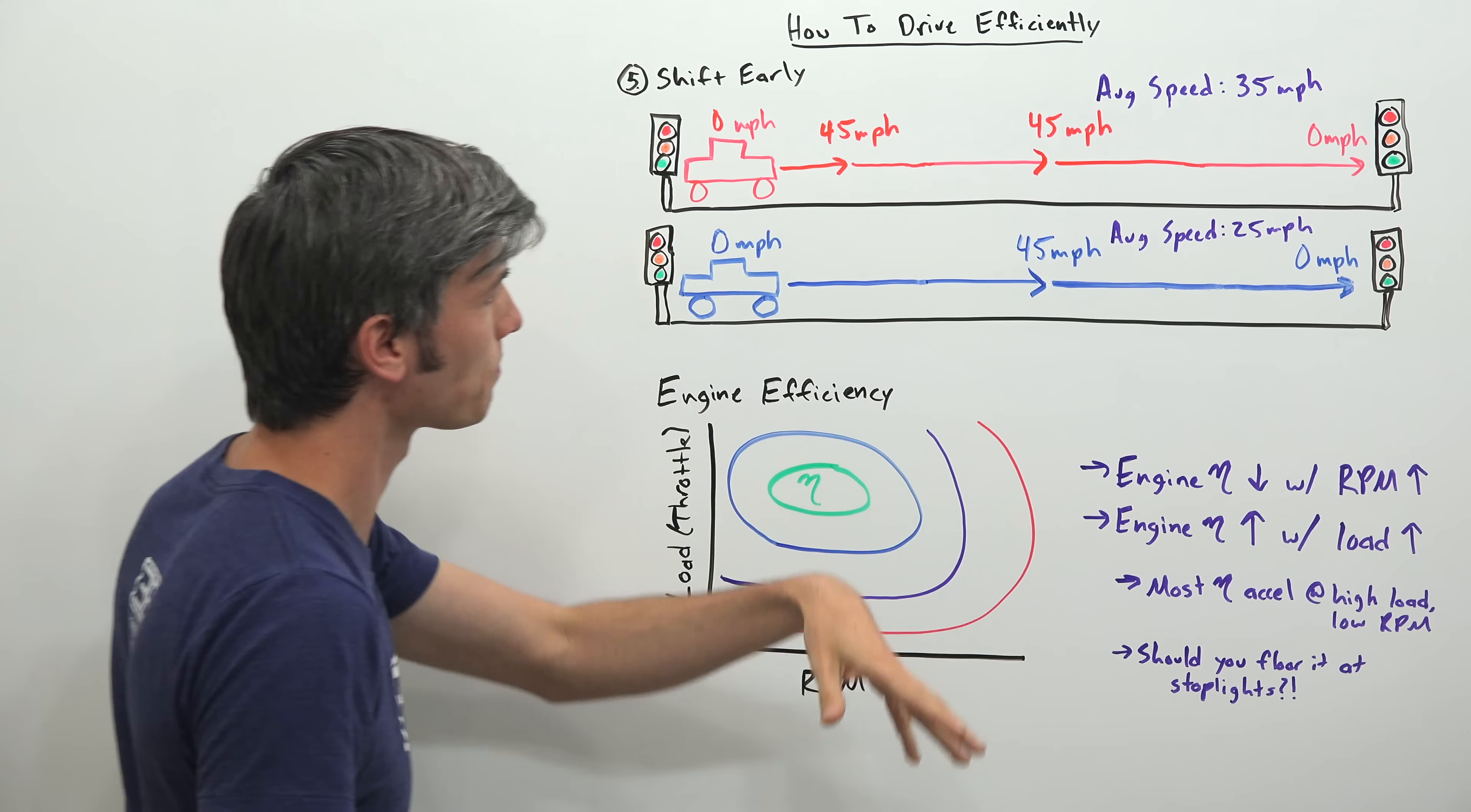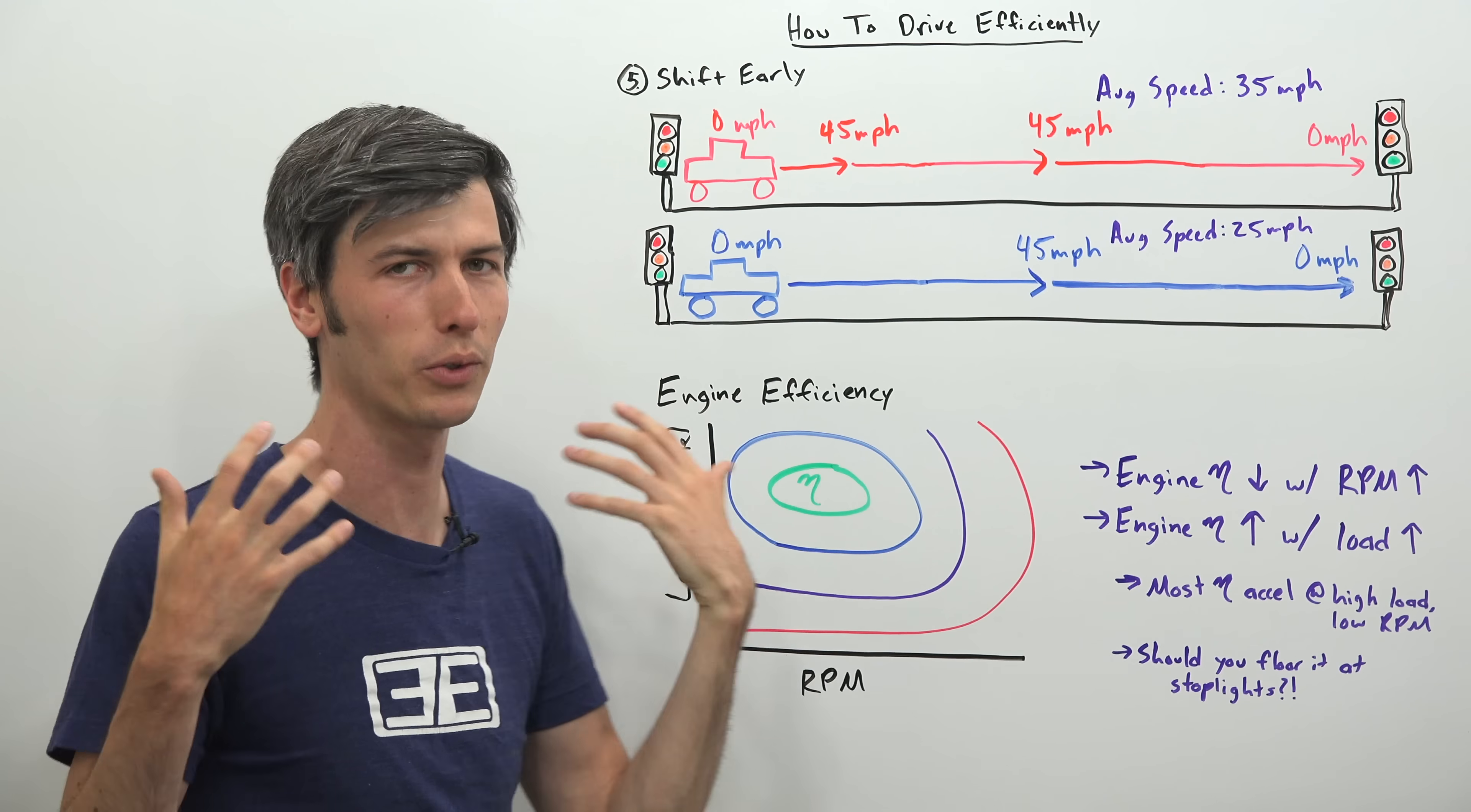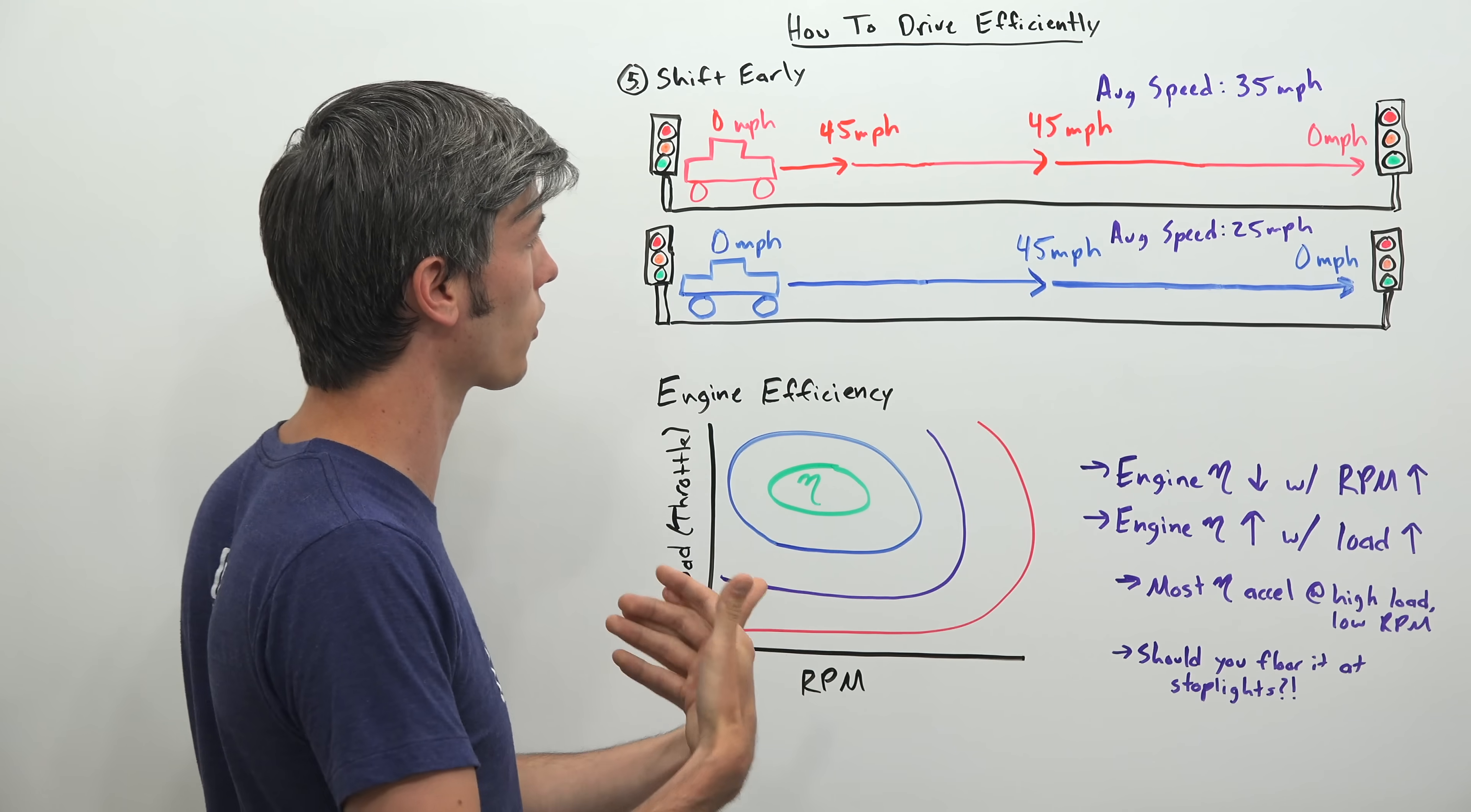So our average speed as we get up to 45 miles per hour and then slow down to that stoplight, our average speed is just 25 miles per hour. So if we go back to our first scenarios we were discussing, you want to maintain the lowest average speed possible. Generally speaking that's going to be the most efficient. Because you have the least amount of resistive forces as your average speed is decreased.